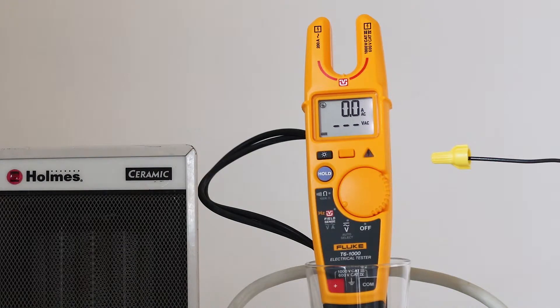The Fluke T6-1000, according to manufacturer's specifications, is rated to measure 1000 volts AC or DC and 200 amps in the current mode. It is okay for 1000 volts in a CAT 3 location and 600 volts in CAT 4, where there is greater available current.